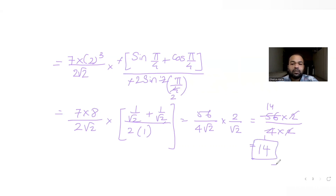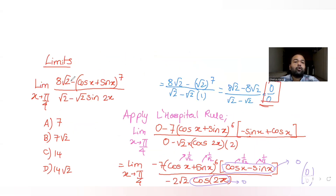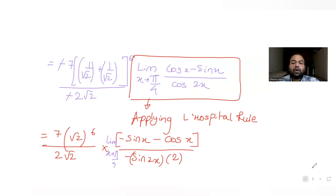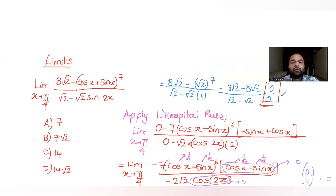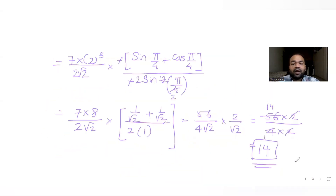So the correct answer is 14. The limit of (√2 − cos x + sin x)^7 / (√2 − √2·sin 2x) as x → π/4 equals 14. I hope you understand how to solve this type of question by applying L'Hôpital's rule whenever you get an indeterminate 0/0 form — taking separate derivatives of numerator and denominator until you can evaluate the limit.